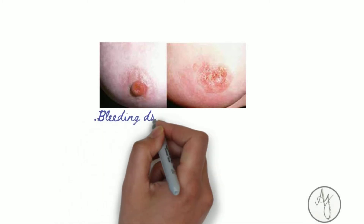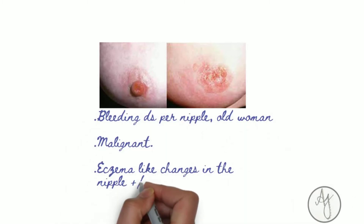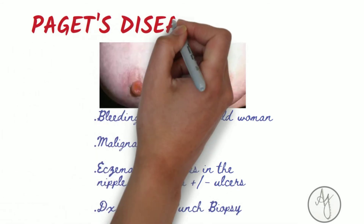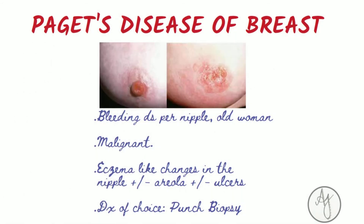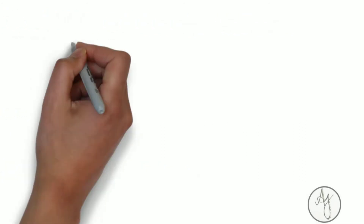If there is bleeding discharge per nipple in an older woman, with eczema-like changes in the nipple or areola along with ulcers, it is usually Paget's disease. It is malignant and we diagnose it using a punch biopsy.